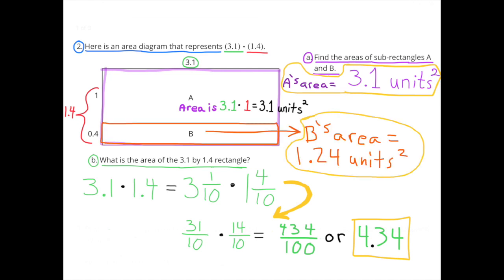Sub-rectangle B: 0.4 × 3.1. So the area for sub-rectangle B is 1.24 units squared.